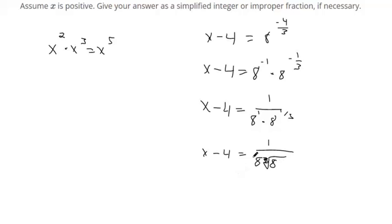The cube root of eight is something we can calculate. A cube root means something that multiplies by itself three times to make eight. Two times two times two makes eight. So one over eight times two.